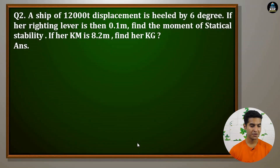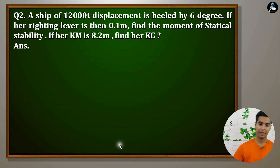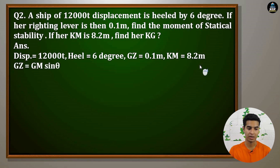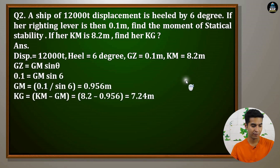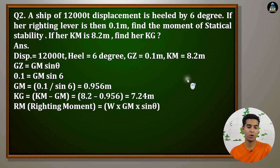Question 2: A ship of 12,000 ton displacement is heeled by 6 degrees. If her righting lever is 0.1 meters, find the moment of statical stability. If her KM is 8.2 meters, find her KG. Given: displacement = 12,000 tons, heel = 6°, GZ = 0.1 meters, KM = 8.2 meters. Using GZ = GM × sin θ: 0.1 = GM × sin 6°, so GM = 0.956. KG = KM − GM = 8.2 − 0.956 = 7.24 meters.